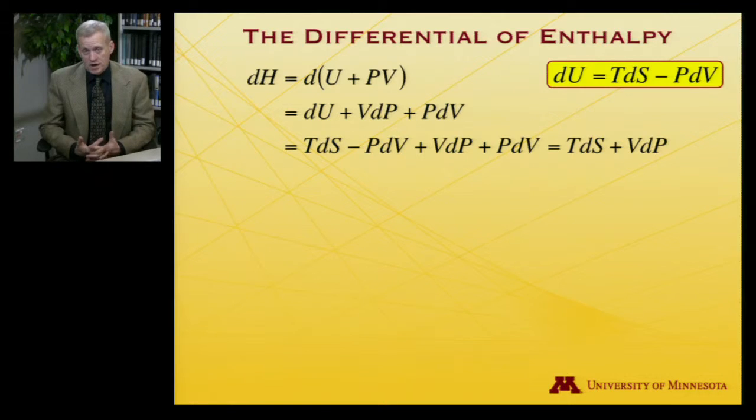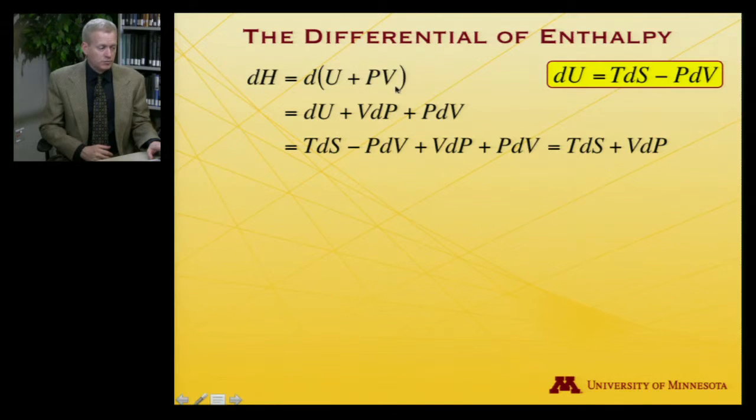Here's the way I would have derived that last problem. If you want to know dH, we replace H with its definition, U plus PV. So as I take the differential operator through there, I'll get dU plus VdP and PdV. But I know that dU is TdS minus PdV, so I swap that in. Now I've got a minus PdV and a plus PdV. Those will cancel out, and I'm left with TdS plus VdP.